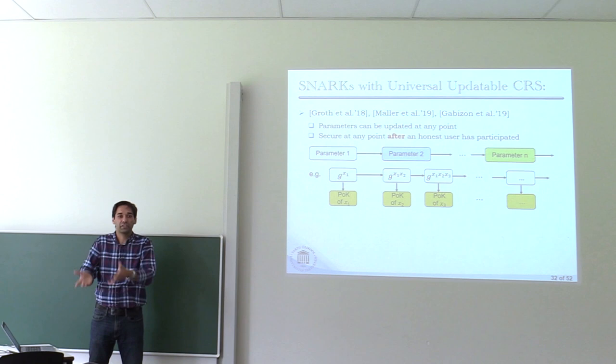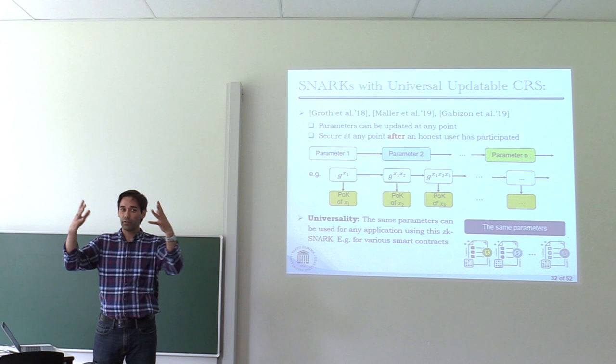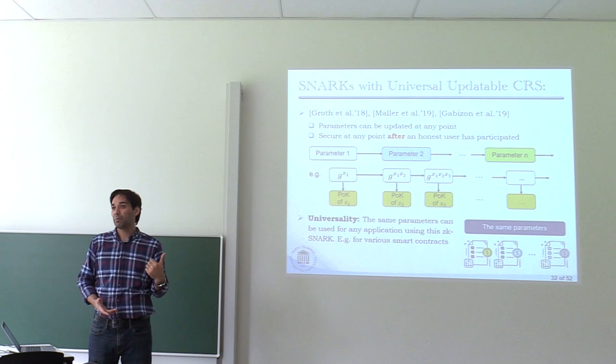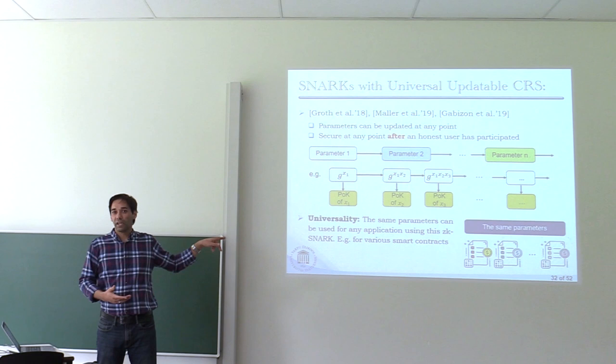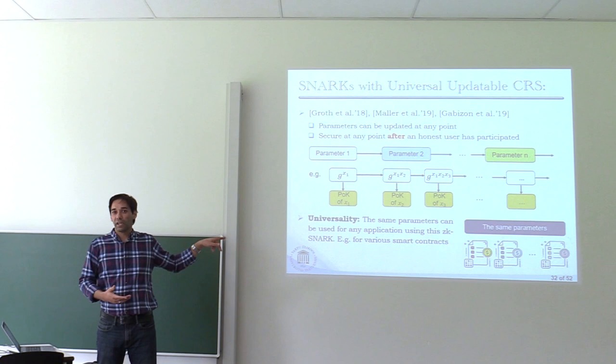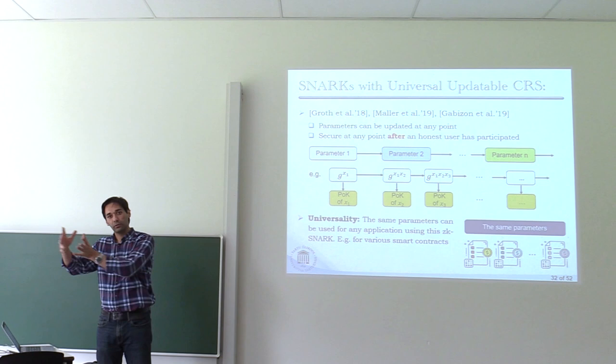Additionally, this approach is universal. SNARKs had one problem: if you change the circuit for which you want to give a proof, you need to generate a new CRS. This is a problem in applications like HAWK, which has different smart contracts and thus needs different circuits. With universality, you can use the same string for different smart contracts — you use the universal parameter and customize it for a particular smart contract.